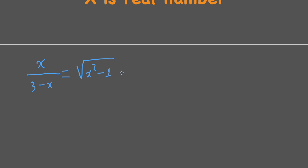On the right hand side of the equation, the expression contains an even radical, so it means it's always greater than or equal to 0. Then on the left hand side we should have the same thing, meaning x will be between 0 and less than 3, because the denominator cannot equal 0.